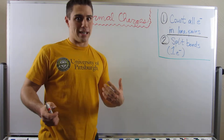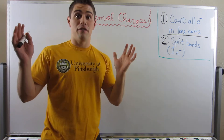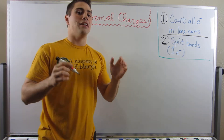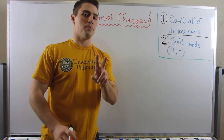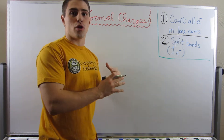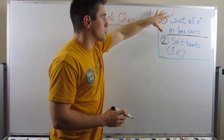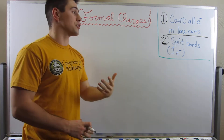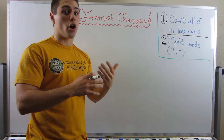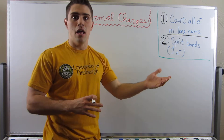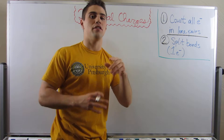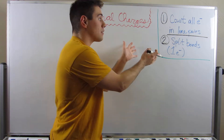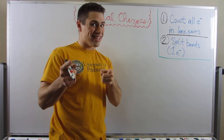Finally, we can talk about formal charges like I promised. In formal charge world there are really two rules. Number one: when you're assigning a formal charge to an atom, you count all lone pair electrons — each electron counts as one. However, if you encounter a bond, you split it in half and it counts as one for that atom. But let's just look at it in an example.